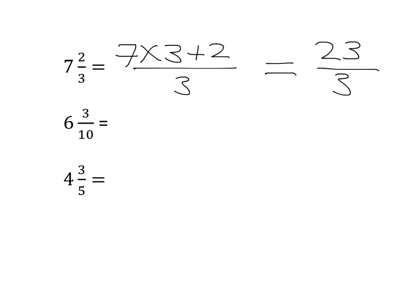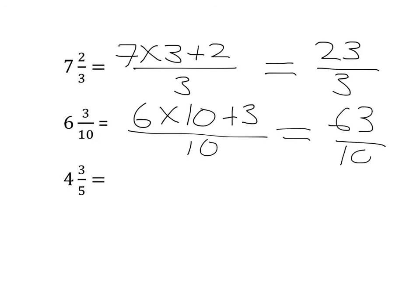Or if we had six and three tenths, here we would say six times ten. And then we need to add on those little three extra. So we need to add on those three. And we're still dealing in tenths. So we will have sixty-three over ten.